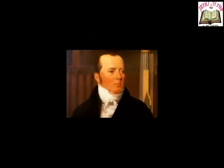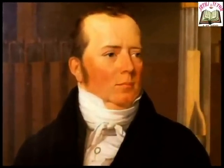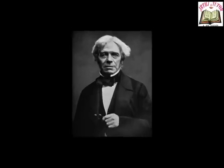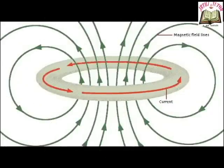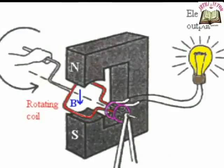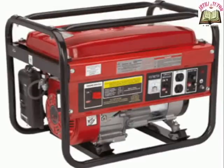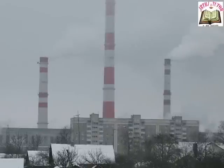In 1819, Oersted for the first time demonstrated that an electric current flowing through a conductor creates a magnetic field. Similarly, Michael Faraday was able to show that a magnetic field applied near a conductor creates an electric field in it. These discoveries led to the invention of electric motor, generators and led to industrialization.